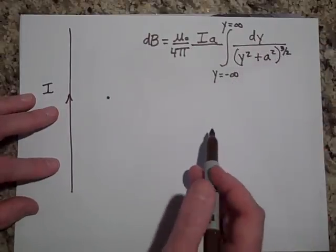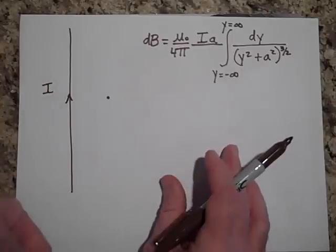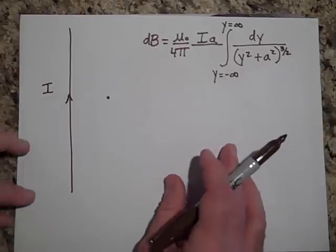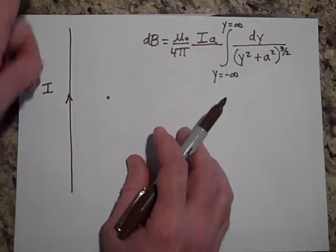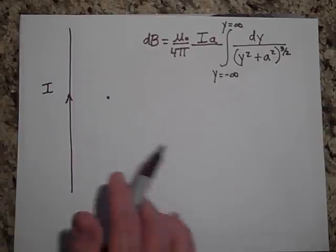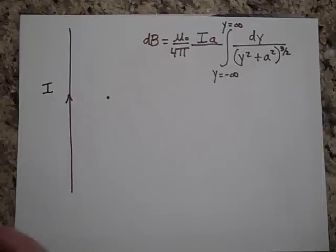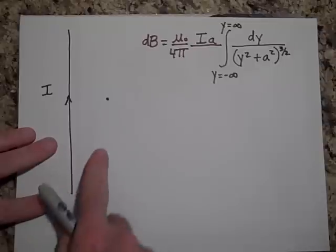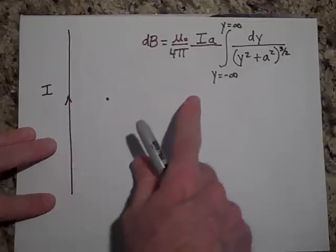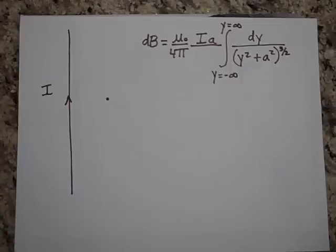I'm integrating from y equals negative infinity to y equals positive infinity, because our wire goes way down there and all the way up. When you're way down there, r is so huge and the angle theta is so small that you hardly add anything to the field.